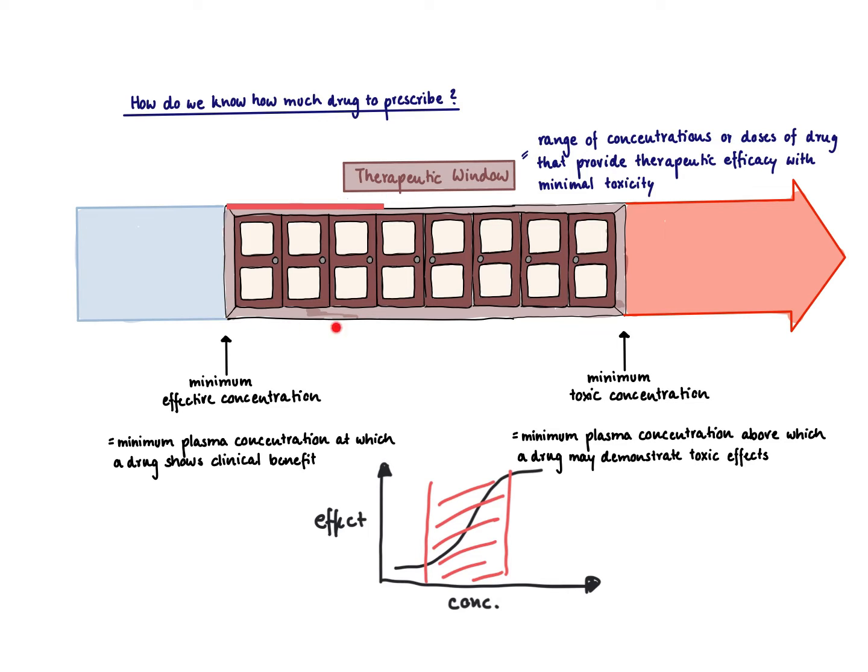So we can also see that here at this window. We can say, if a drug like acetaminophen that we use to treat pain, at one point we're going to see pain relief. Below that, probably not. We can stay in here, but then if we go too high, we're also going to see some toxic effects.